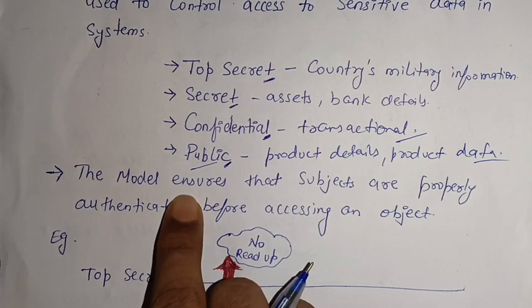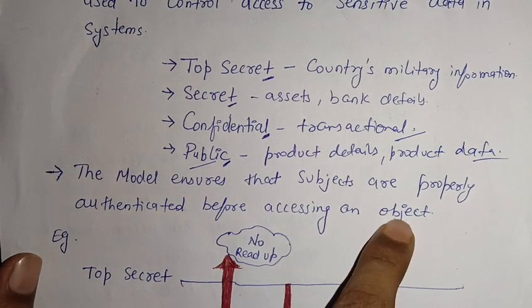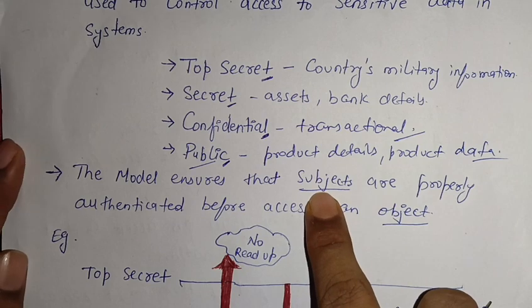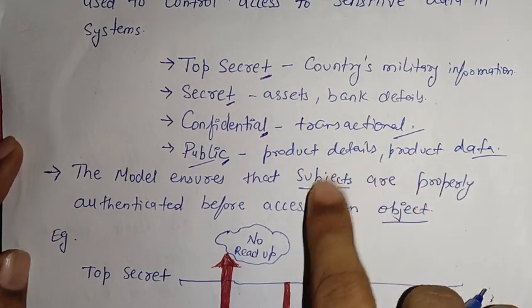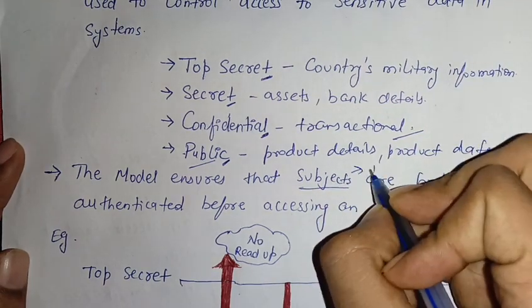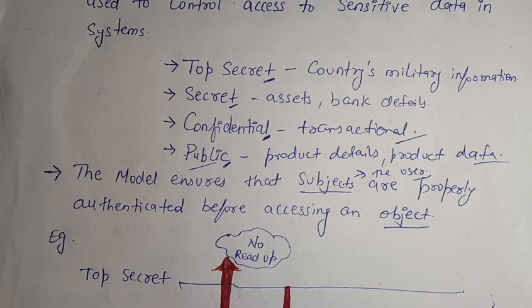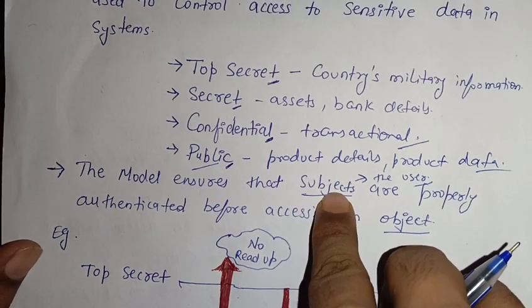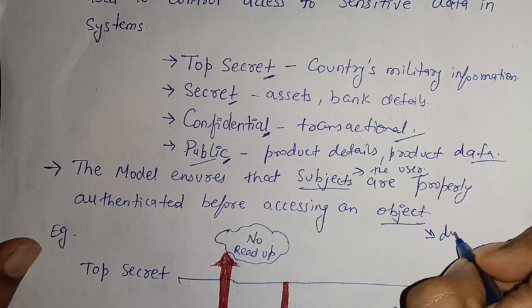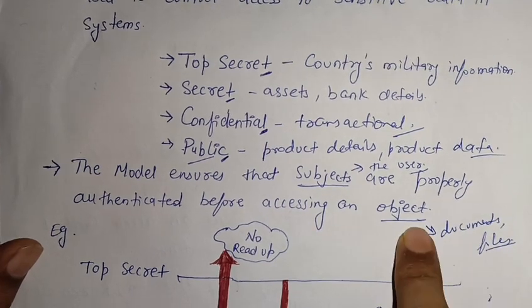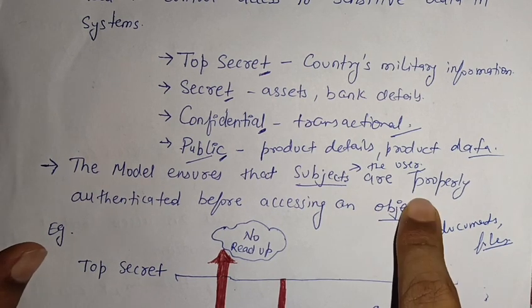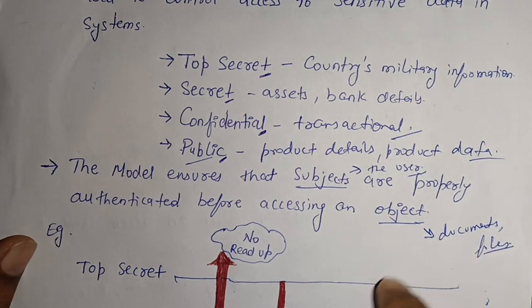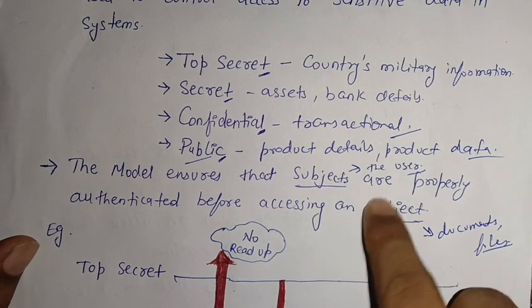The model ensures that subjects are properly authenticated before accessing an object. Two important terms in this model are subject and object. Subject is the user — whoever is operating the system and has access or control of any system. Object refers to documents, files, PDFs, databases — all information saved in directories or databases.